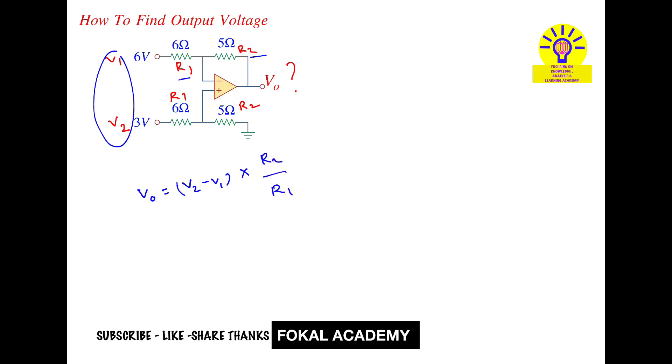Now substitute all the values. V2 is 3V, so 3 minus 6, times R2 is 5, so 5 by R1 is 6. This becomes minus 3 times 5 by 6, which equals minus 2.5 volts. This is the output voltage for the given op-amp circuit.